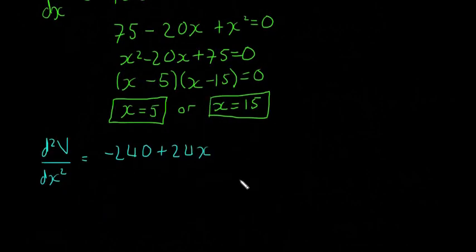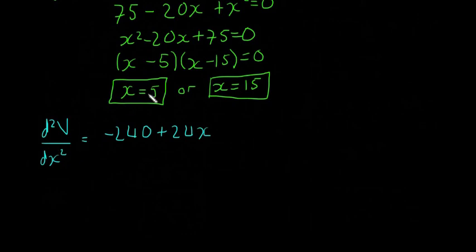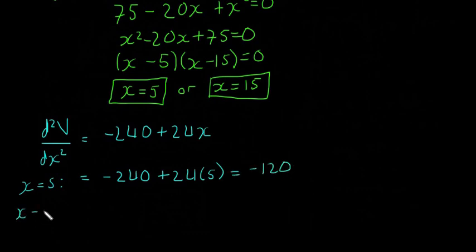Okay, so then we're going to find d²V/dx² at X is equal to 5 and at X is equal to 15. So I'm going to say X is equal to 5. This is going to be equal to, so I'll have minus 240 plus 24 by 5, which is going to be equal to minus 120 and then X is equal to 15 is equal to minus 240 plus 24 by 15. So we just sub our value of X and X here into d²V/dx². We find what's equal to, and this is going to be plus 120.